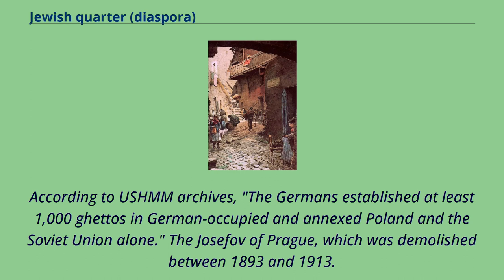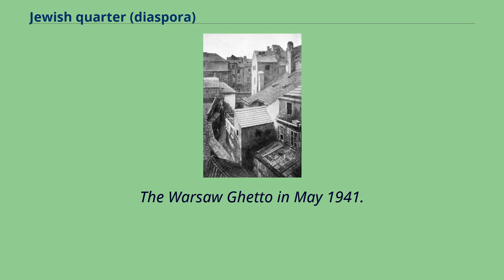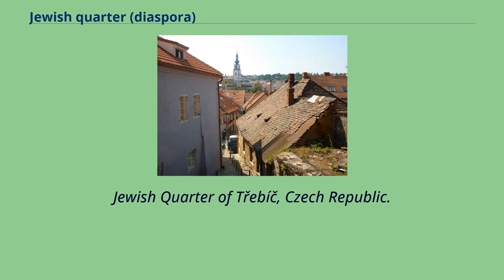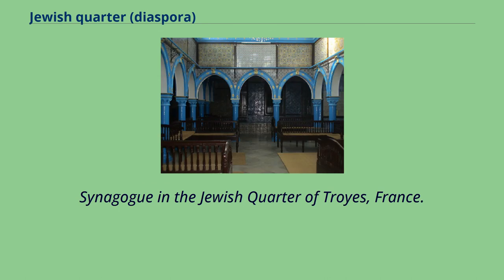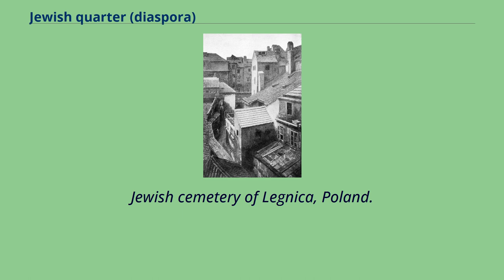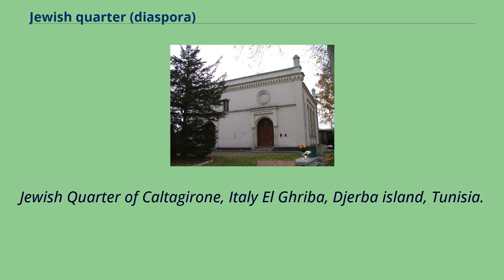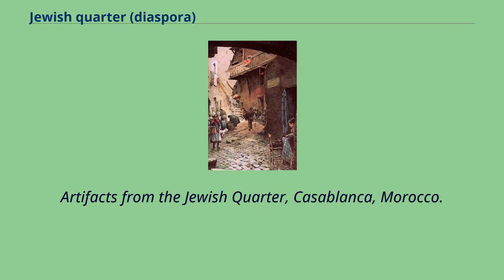The Josefov of Prague, which was demolished between 1893 and 1913. The Warsaw ghetto in May 1941. Jewish quarter of Chebic, Czech Republic. The entrance, called the Porte de la Calendrée, to the Jewish quarter in Avignon, France. Synagogue in the Jewish quarter of Tra, France. Jewish cemetery of Legnitza, Poland. Jewish quarter of Kaltajaroni, Italy. El-Ghriba, Djerba Island, Tunisia. Artifacts from the Jewish quarter, Casablanca, Morocco.